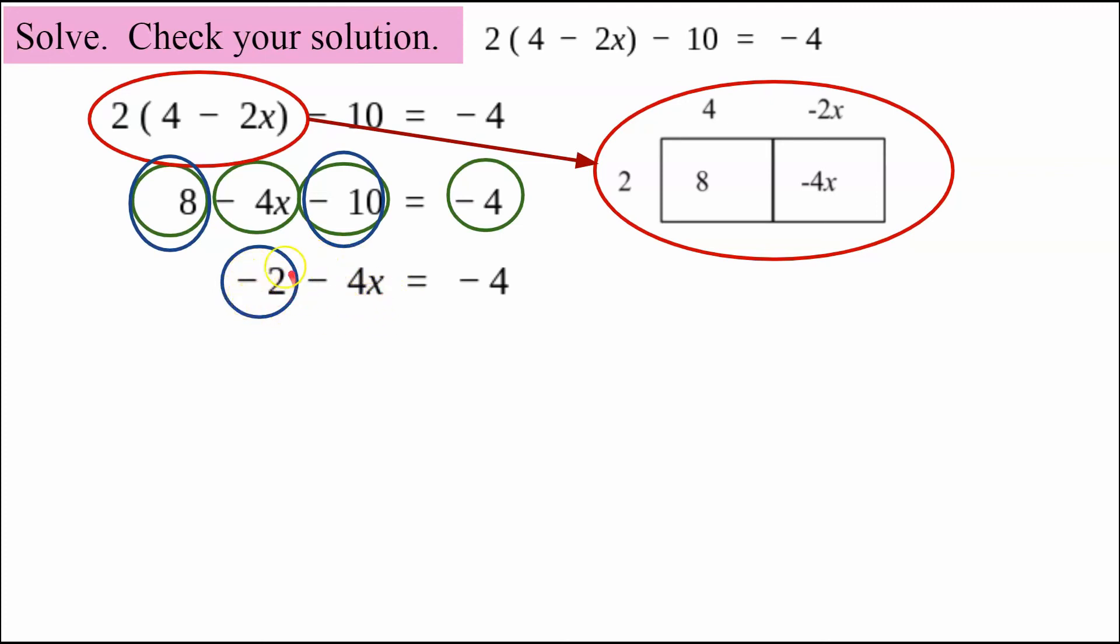So I want to undo this negative 2. I want to create a zero pair so that it becomes zero. The opposite of negative 2 is positive 2. So I'm going to add 2 to both sides of the equation using the addition property of equality, which will leave me my negative 4x.